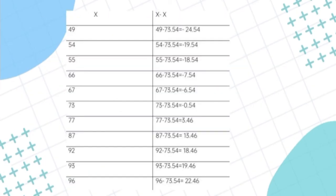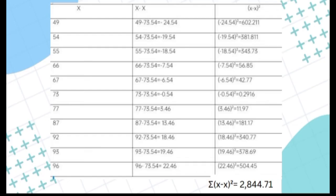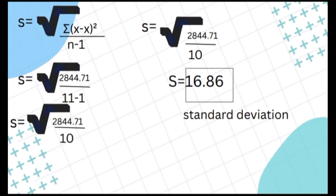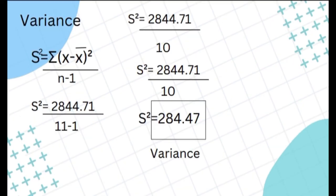The first column is x, our given values. The second column is x minus x-bar — we subtract our mean from each given value. The third column is x minus x-bar raised to 2, so those results are squared. After squaring and adding all the answers, the total is 2,844.71 — that is our summation of x minus x-bar raised to 2. Using our formula, s equals the square root of 2,844.71 over 11 minus 1, which is 10. So 2,844.71 divided by 10, then square-rooted, equals 16.86. Our standard deviation is 16.86.